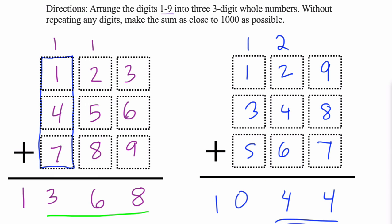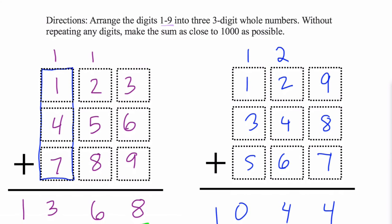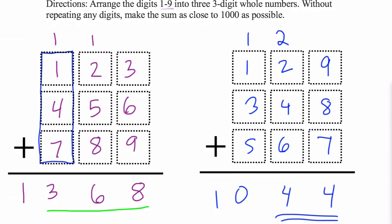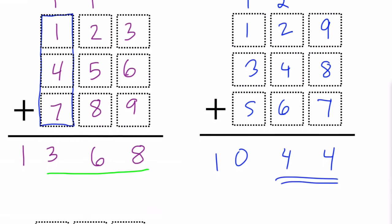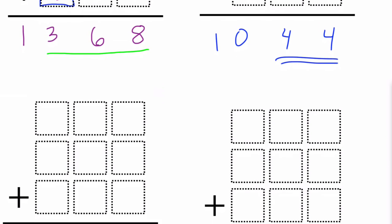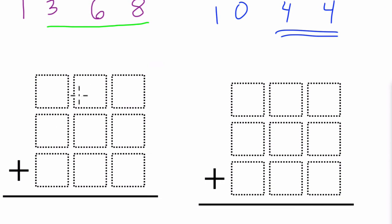And you can continue to kind of jumble around the numbers, but what you might start to think is, can we get 1,000? Can we actually reach that number? And if the answer is yes or no, it doesn't really matter. The question is, what's really close to 1,000? Can we reach that number?